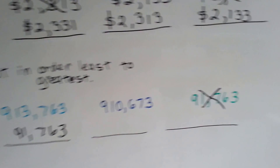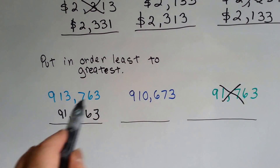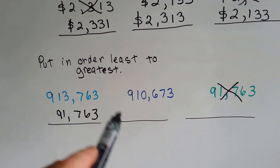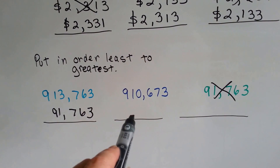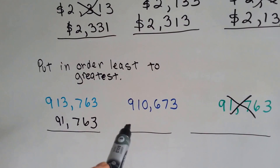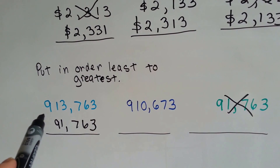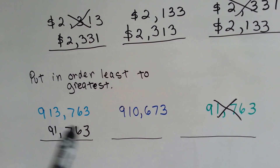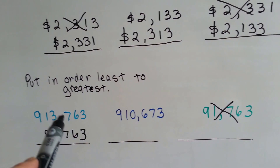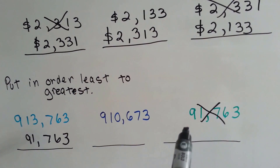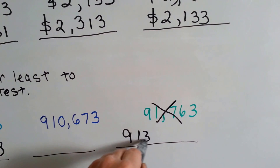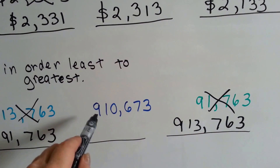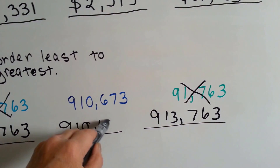So now that one's done. Which one is smaller? Remember, we're going from least to greatest — littler to bigger. We need to put the biggest one last and the middle one in the middle. If you said this one, you're right, because this one has a three in the thousands place and this one has a zero. So the biggest goes last: 913,763. And the middle one is 910,673. And now we've correctly put them in order from least to greatest.